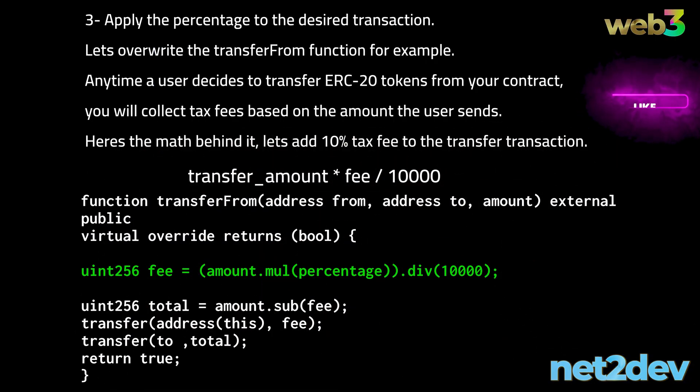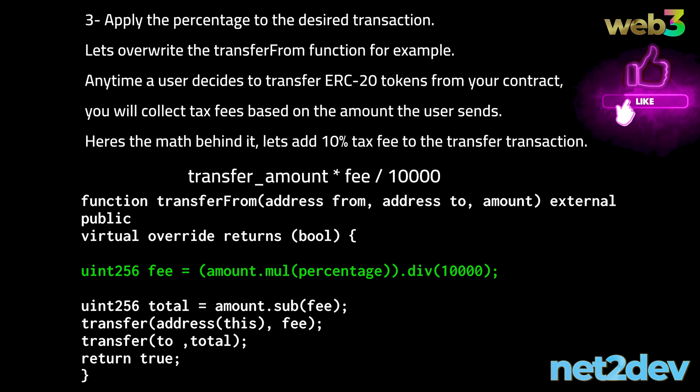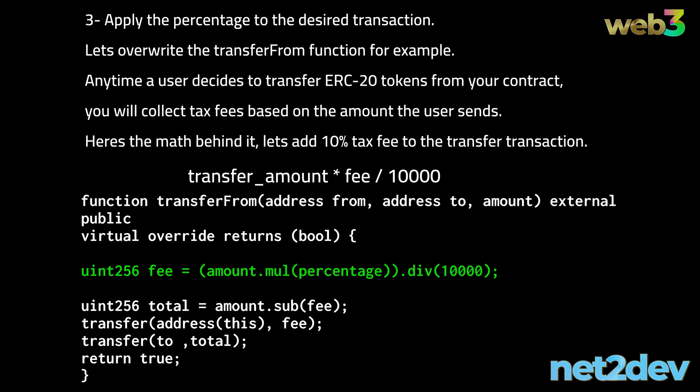Let's apply the tax to the function. Notice, highlighted in green, a variable called fee — it will store the percentage fee calculated by applying the tax on the amount of tokens to be transferred by the user. We will then create another variable called total, and subtract the amount of tokens minus the fee previously calculated.